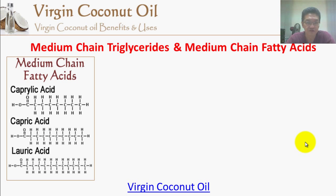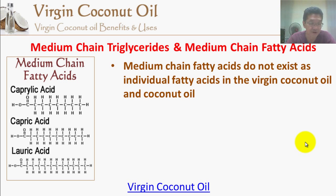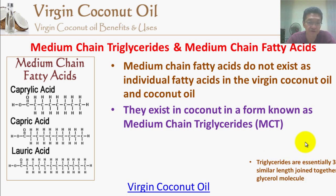Now let's talk more about medium chain triglycerides and medium chain fatty acids. The three medium chain fatty acids contained in coconut oil — caprylic acid, capric acid, and lauric acid — do not exist as individual fatty acids in the virgin coconut oil. The form in which they exist is known as medium chain triglycerides, or MCT for short. The medium chain fatty acids are also abbreviated as MCFAs.